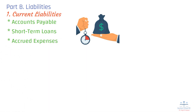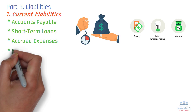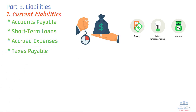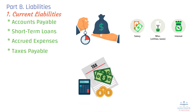Additional current liabilities include accrued expenses — salaries, rent, utilities, and other expenses that have been incurred but not yet paid, which the company must settle soon — and taxes payable, meaning taxes the company owes to the government such as income tax, sales tax, or payroll tax.